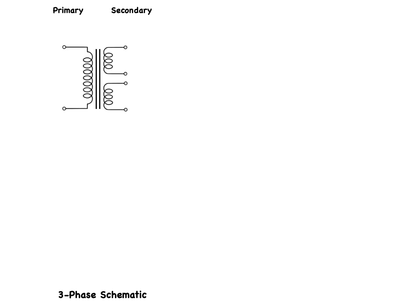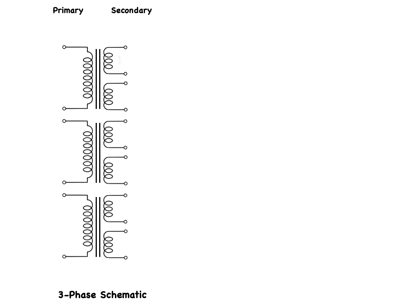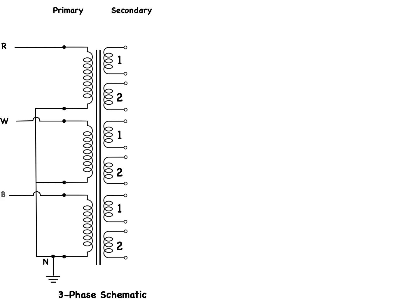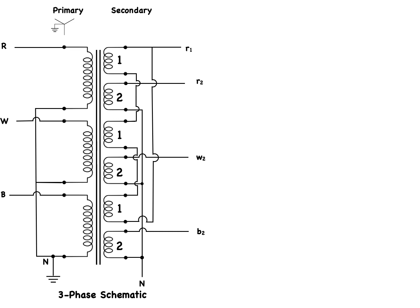Now let's look at a transformer with a dual secondary — one primary winding magnetically linked to two secondary windings. Because we are dealing with a three-phase system, we need to consider three of these transformers, which could be wound on the same core or be three individual transformers forming a transformer bank. To keep track of connections, let's number the secondary windings of each transformer 1 and 2. Let's connect the primary windings in a grounded Y configuration, connected to a balanced three-phase system — red, white, and blue. Let's connect the number 2 winding of each transformer secondary in a Y configuration — ungrounded — calling the connections r2, w2, and b2. Next we connect the number 1 winding of each transformer secondary in a delta configuration, calling the connections r1, w1, and b1.